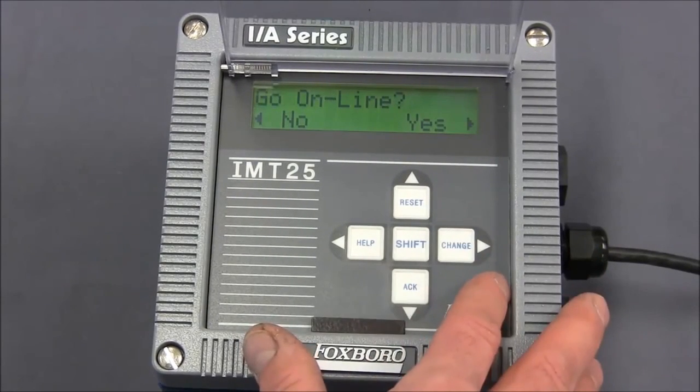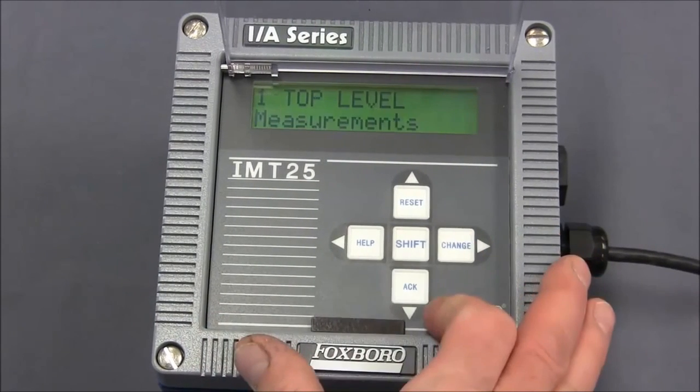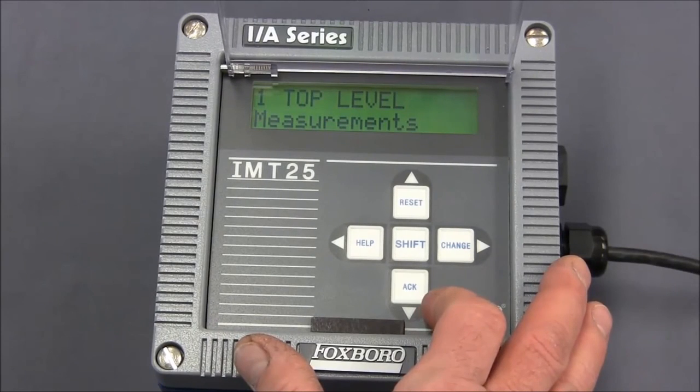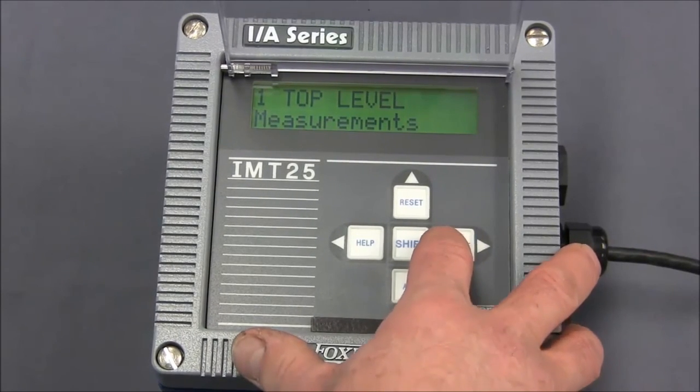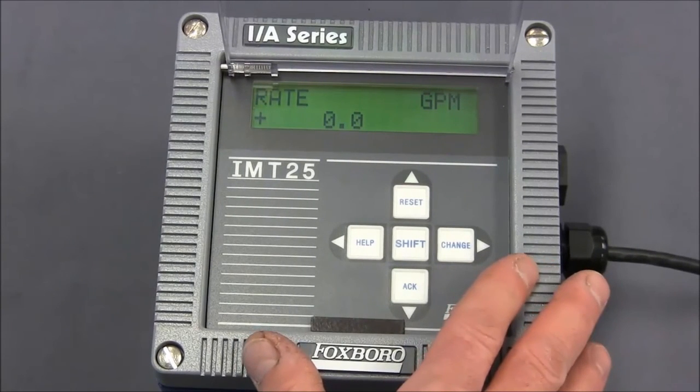Finally, we hit the right arrow and it will be prompted to go online. Hit the right arrow to say yes. The display says top level measurements. We hit the right arrow one more time and now we're back at the normal measurement screen.